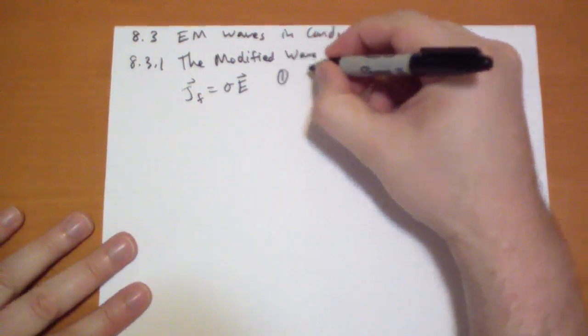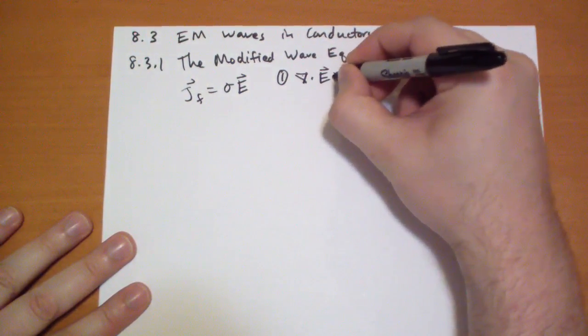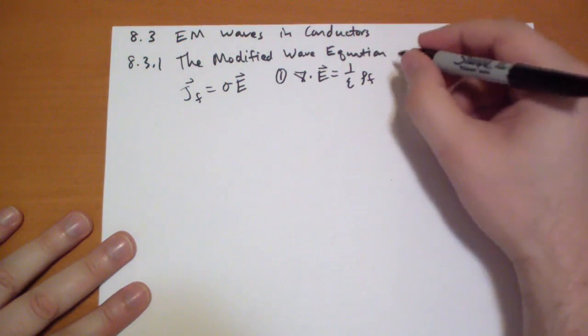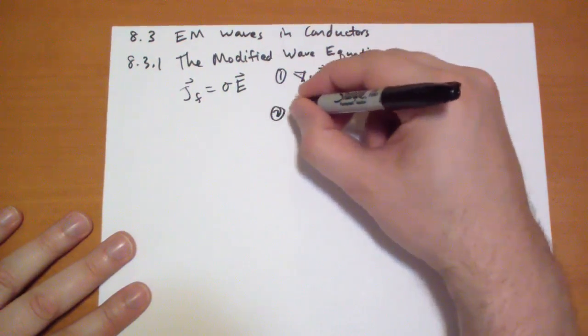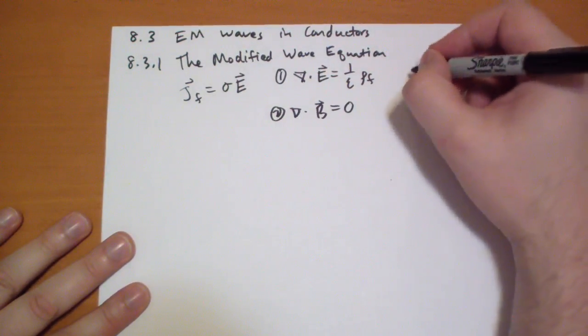And this kind of throws a monkey wrench into our Maxwell's equations. They now read: one, we have the divergence of E is equal to whatever free charge we have. We'll talk about that in a second. Two, the divergence of the B vector is equal to zero until somebody finds a monopole.